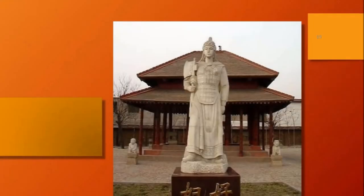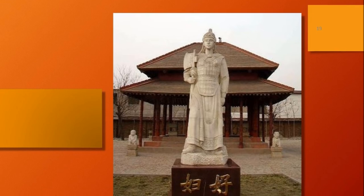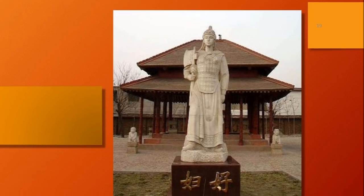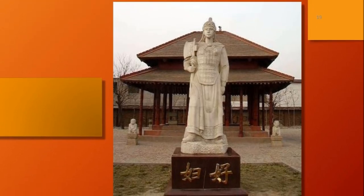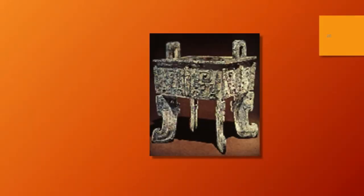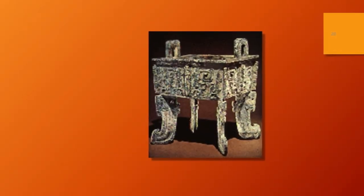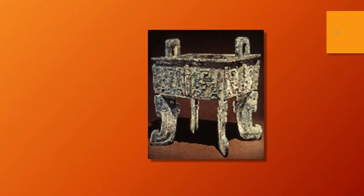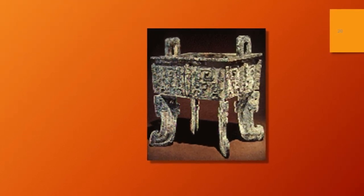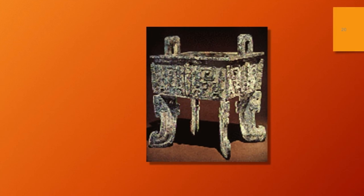This shows a statue of Lady Hao at her tomb. Here are a few slides on the material found in Lady Hao's tomb — this is almost like a ceremonial sink, and in the next scene you will see a bronze vase.